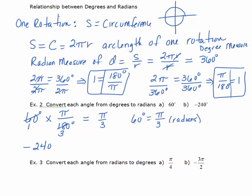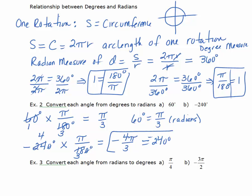For negative 240 degrees, we want radians in the numerator and degrees in the denominator, so multiply by π over 180 degrees. Divide both by 10, then 6 goes into both, giving 3 in one and 4 in the other. Multiplying across gives negative 4π over 3, so negative 240 degrees equals negative 4π over 3.